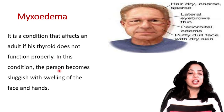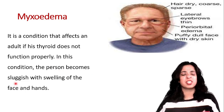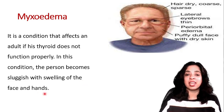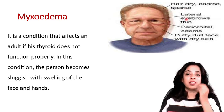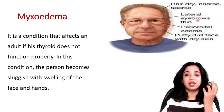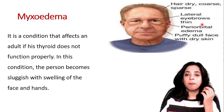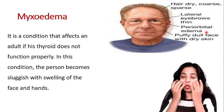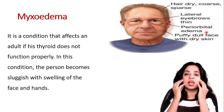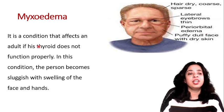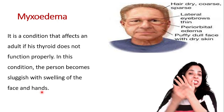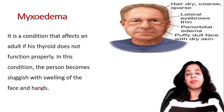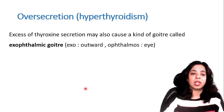Next is myxedema. It is a condition that affects an adult if the thyroid does not function properly. The person becomes sluggish and lethargic, with swelling of the face and hands. The hair becomes dry and sparse, the lateral eyebrows become thin, there is periorbital edema — swelling below the eyes — and a puffy, dull face with dry skin. You can also see overall puffiness in the face and swelling in the hands.